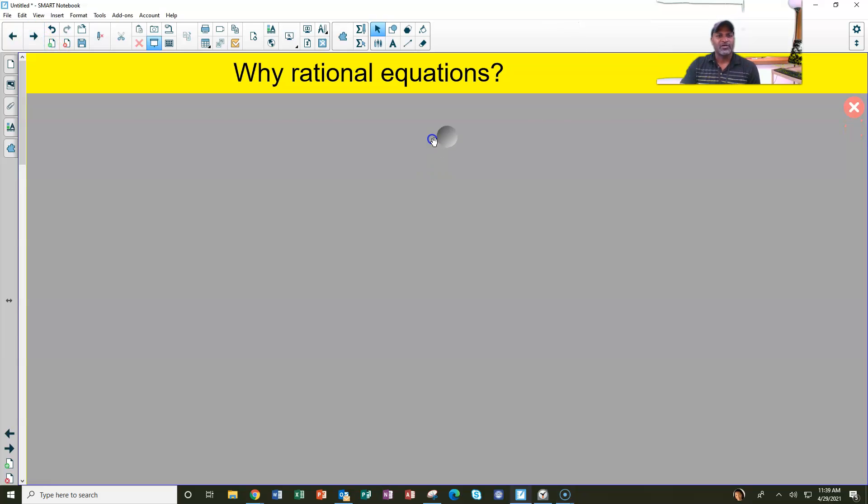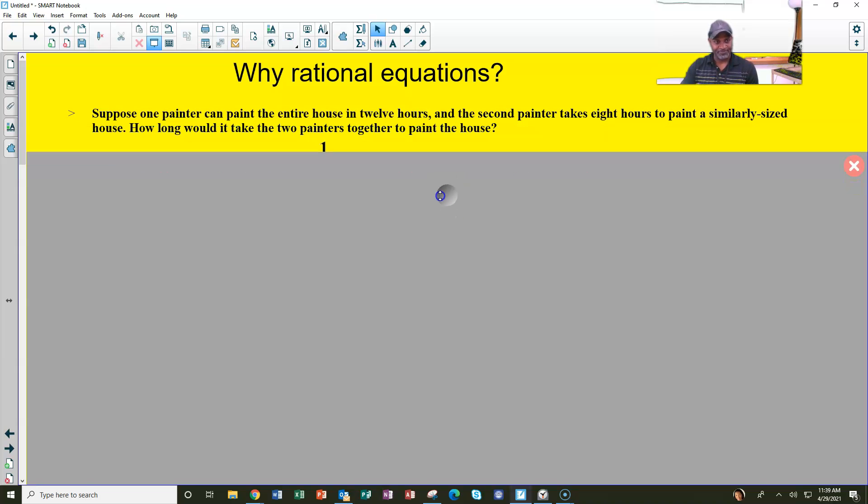We'll look into why rational equations? Why are we talking about rational equations? Let's look at this formula again. One painter can paint the entire house in 12 hours. Second painter takes eight hours to paint a similarly-sized house. So how long would it take the painters together to paint the house?